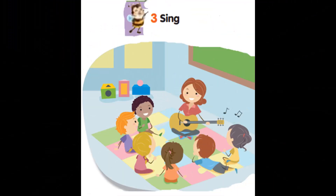Unit 4, page 59, Exercise 3. Sing. What's in your living room, Sammy? What's in your living room? There's a table, there's a couch, and there's a lamp. What's in your living room, Nesma? What's in your living room? There's an armchair, there's a cupboard, and there's a television.